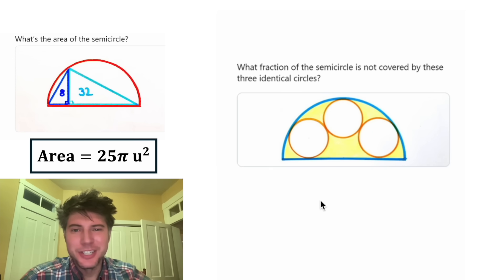Here's the puzzle for day 14. It says what fraction of the semicircle is not covered by these three identical circles. So in other words, we want the ratio of yellow over total semicircle. How exciting.